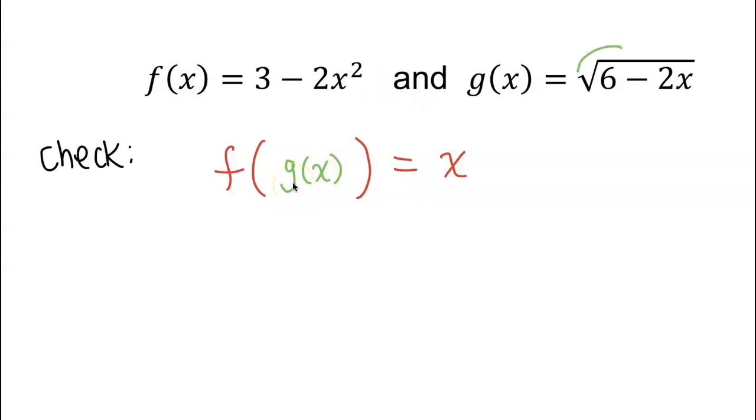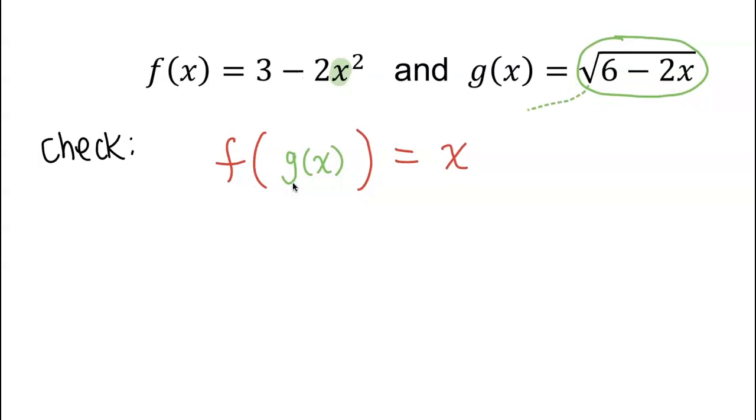I want to plug in g of x, so circle the square root of 6 minus 2x and draw an arrow indicating that this is going in to x. But where is x in the other function? x is right there where I highlighted.